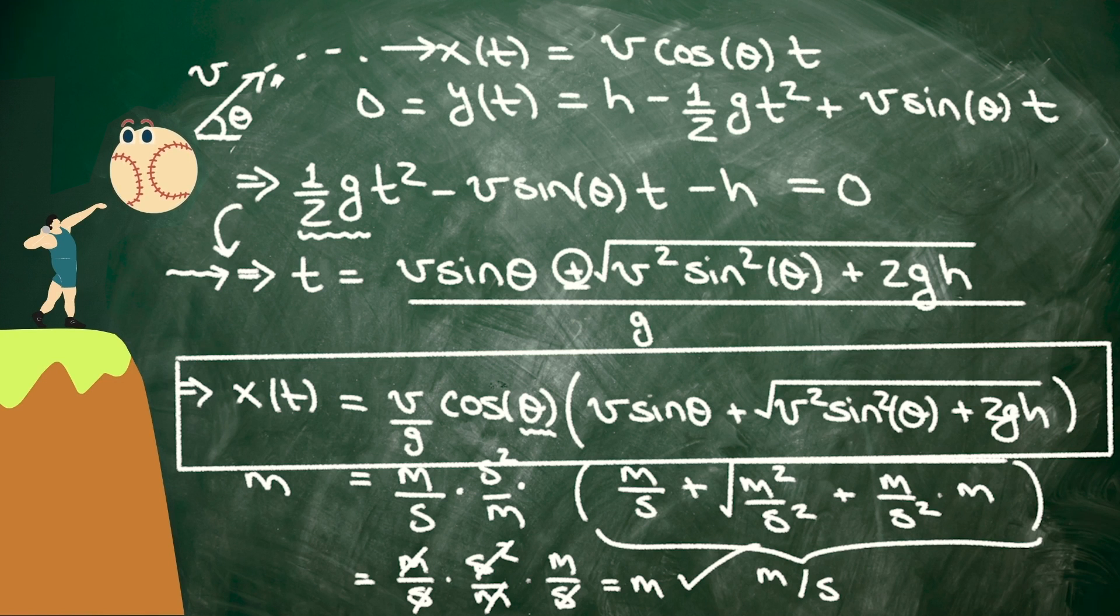Now, checking the units doesn't guarantee that our answer is correct. For example, it doesn't tell us that we got these factors of cosine theta and sine theta correct, because those factors were unitless. And likewise, there could be factors of 2 and half and pi and so on that we can't get just by looking at the units. But whenever you have the wrong units, you know for a fact that you had the wrong answer. There are additional checks that you can make to see if those unitless factors make sense, like checking a limiting case. I'll show you how that works in a future video, so make sure that you're subscribed to the channel.